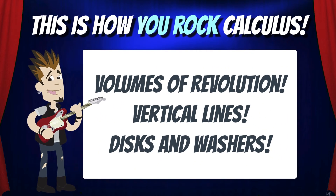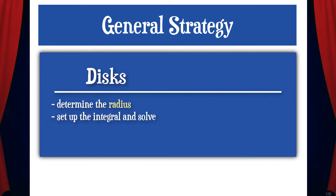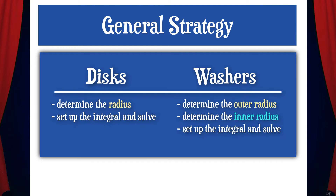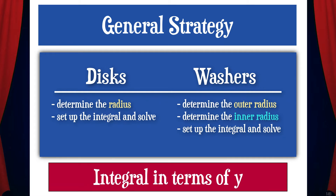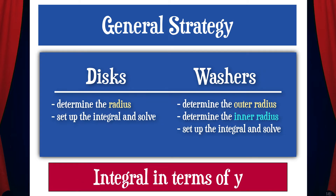Hey everybody. In this video we're going to learn about volumes of revolution around vertical lines with discs and washers. For discs, we need to determine the radius and then set up the integral and solve. For washers, we need to determine the outer radius and the inner radius, then set up the integral and solve. Note that when we find solids of revolution around a vertical line using discs or washers, the entire integral needs to be in terms of y.